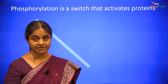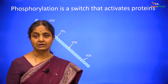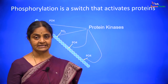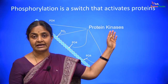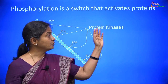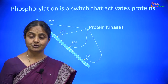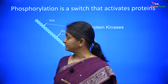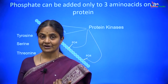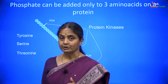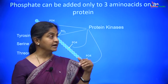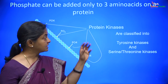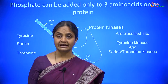Protein phosphorylation — addition of phosphate groups to certain amino acids of a protein — is brought about by enzymes called protein kinases. Kinases are phosphorylases. Glucokinase adds a phosphate group to glucose; protein kinases add phosphate groups to proteins. Phosphate groups cannot be added to any amino acid — there are only three amino acids in a protein that can take up phosphate groups: serine, threonine, and tyrosine. Depending on whether a protein kinase phosphorylates tyrosine residues or serine-threonine residues, we classify protein kinases into tyrosine kinases and serine-threonine kinases.